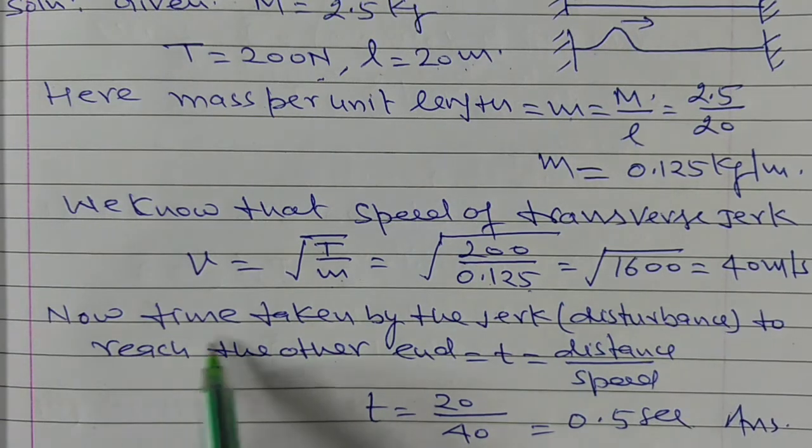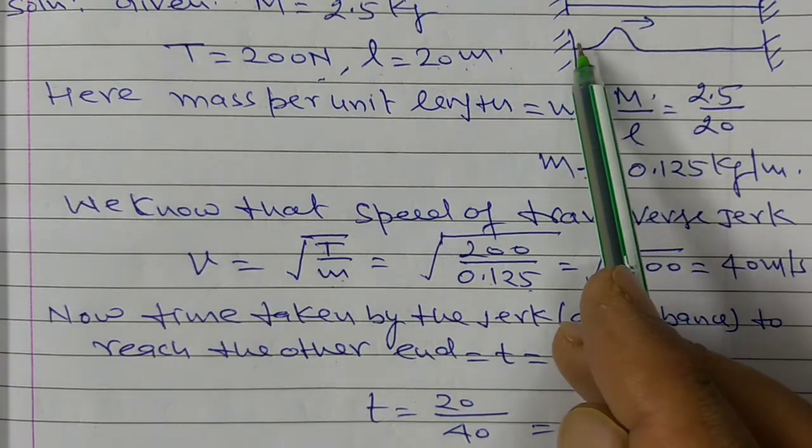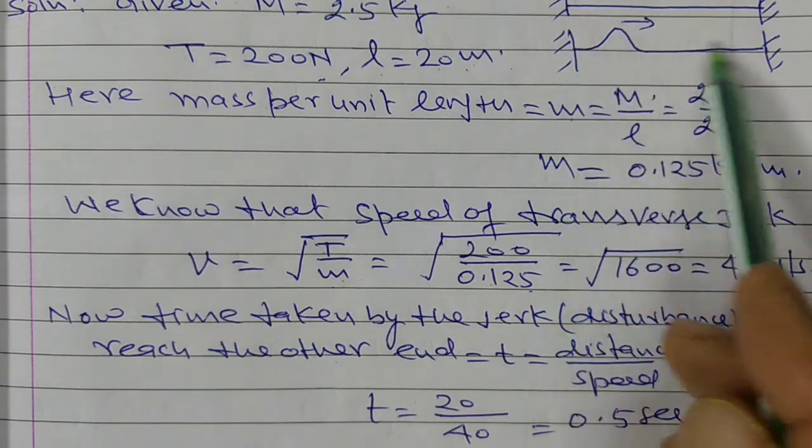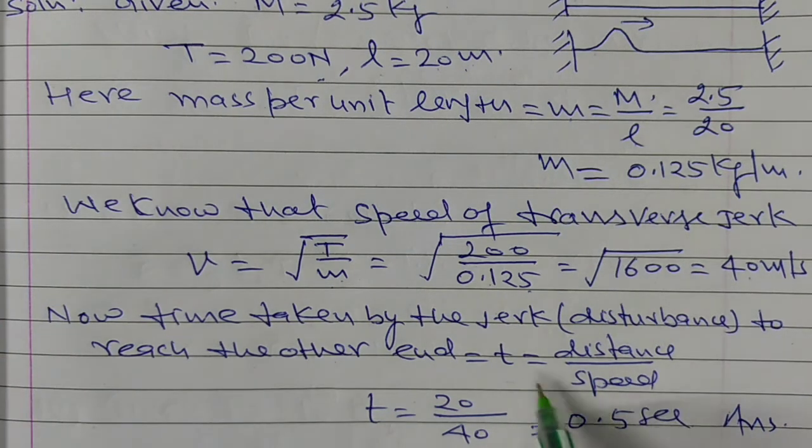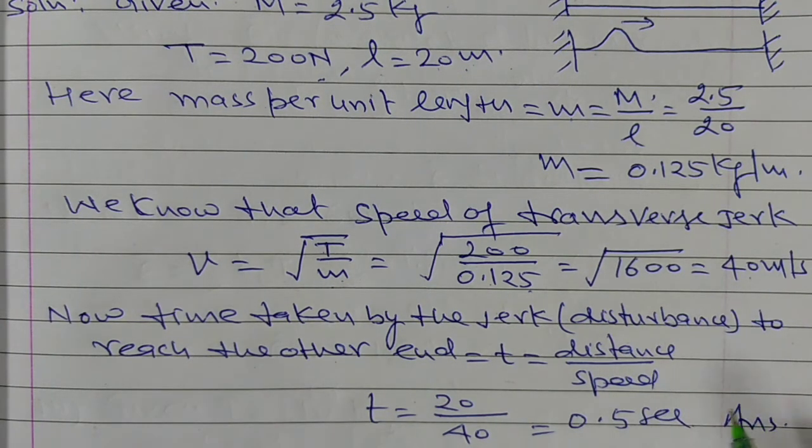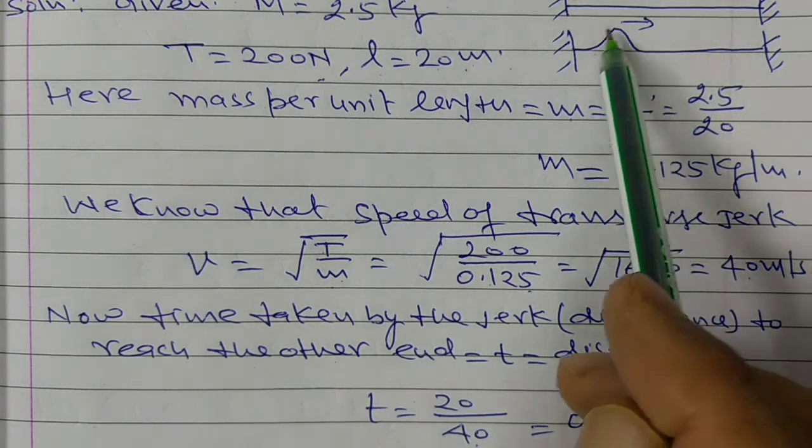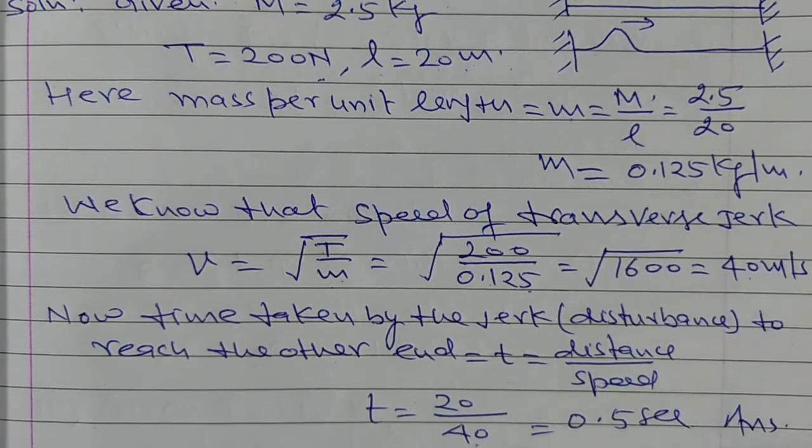Now, the time taken by the jerk or disturbance to reach the other end. Now, time you know is distance upon speed. Time is equal to distance upon speed. Therefore, t is equal to 20 upon 40. Distance is because this length is 20 m and the speed is 40 m per second. Therefore, this is 0.5 second.